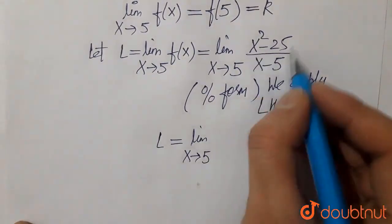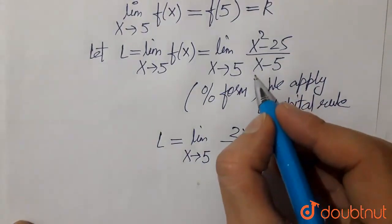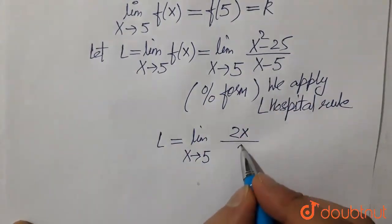On differentiating the numerator, we get 2x, and on differentiating the denominator, we get 1.